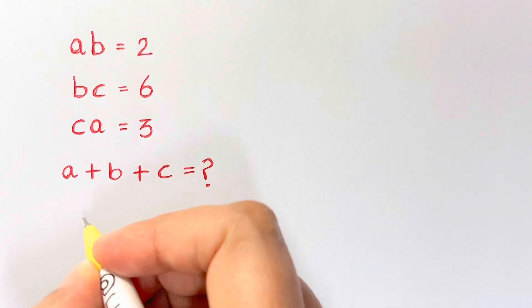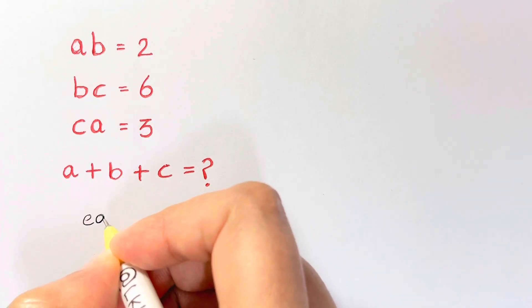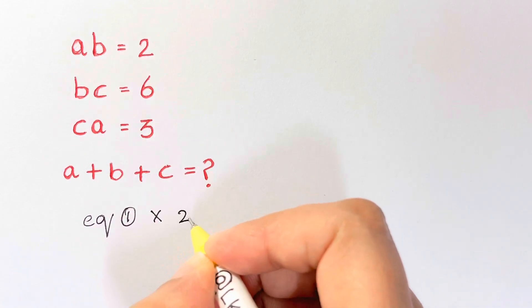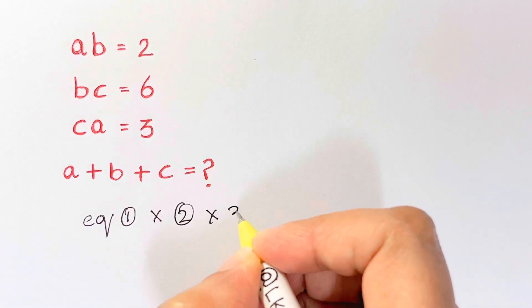So how will we do it? What's the first step? Let's say these three are equations 1, 2 and 3. So we're going to multiply them. Equation 1 times equation 2 times equation 3.